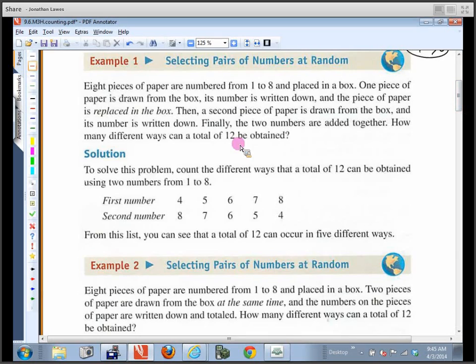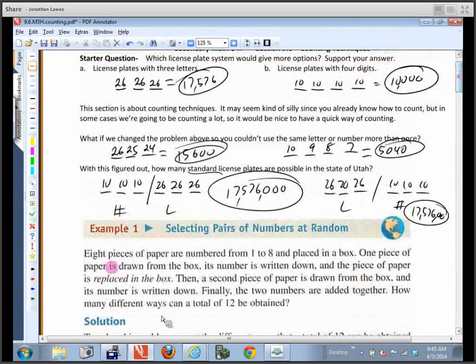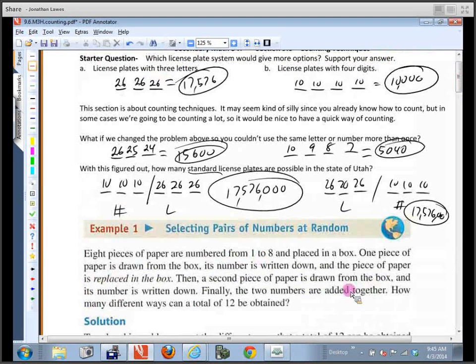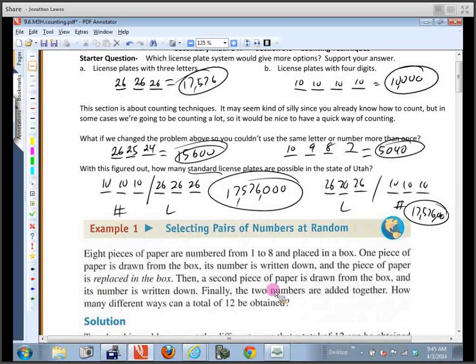So as an example, let's take a look at this right here. Eight pieces of paper are numbered from one to eight and placed in a box. One paper is drawn from the box and the number is written down, and then it's replaced in the box. Then a second piece of paper is drawn from the box and it's written down. Finally, the two numbers are added together. How many different ways can a total of 12 be obtained?